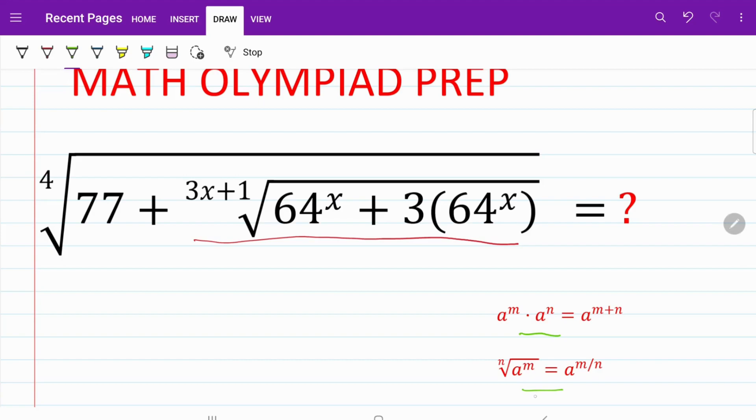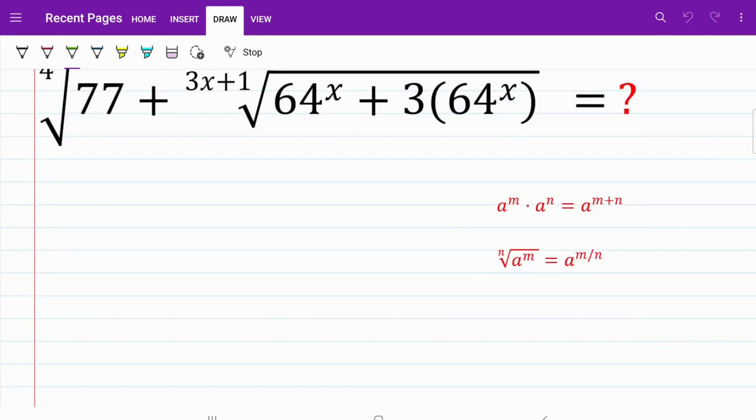And rule number two: a to the n root raised to the power of m can be written as a to the power of m divided by n.